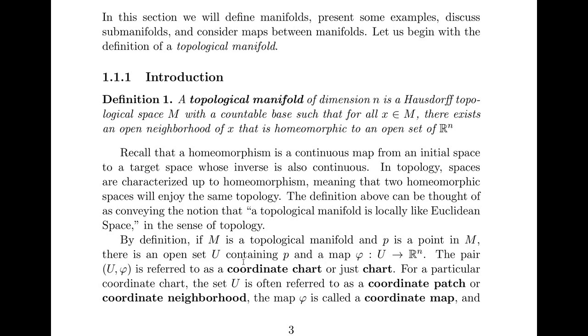Also, with this definition, we see that for any point in M, there's an open set U that contains that point and a map phi that goes from that open set to R^n. In this case, the pair, the map and the open set, is called a coordinate chart or just chart. The set is usually called a coordinate patch or coordinate neighborhood. And the map is called a coordinate map.